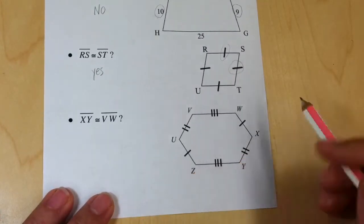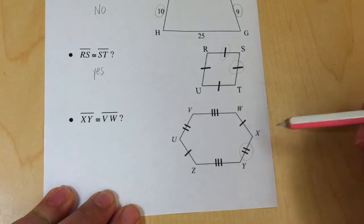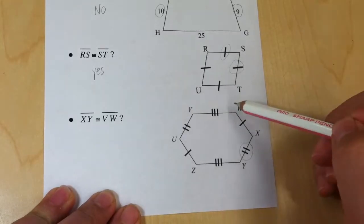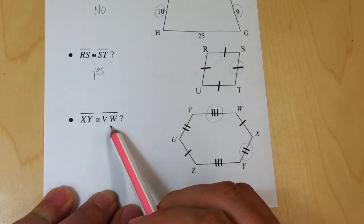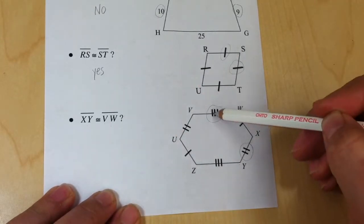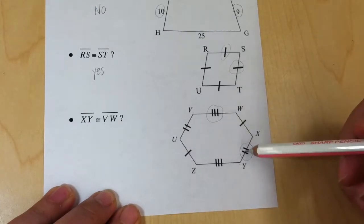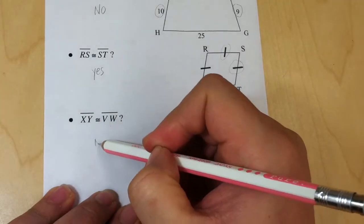And the last example, XY is here. VW is here. So I'm comparing XY and VW. I have two lines here, three lines here. They are not congruent because they do not have the same number of lines. No.